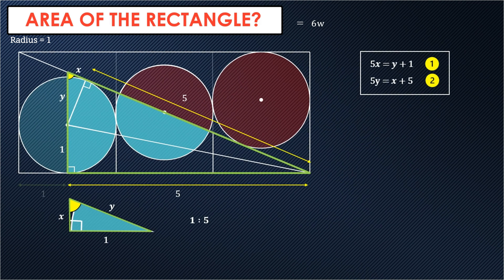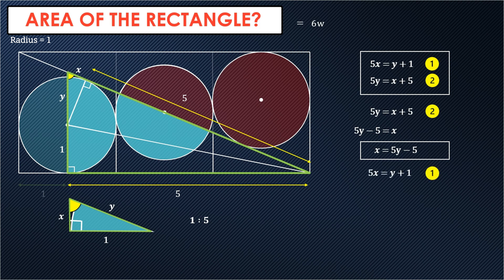Now that we have these simultaneous equations, we can go ahead and solve for Y. So subtract five from both sides. So X equals five Y minus five. And we can use this value for X by substituting it into equation one. So therefore five times five Y minus five equals Y plus one.